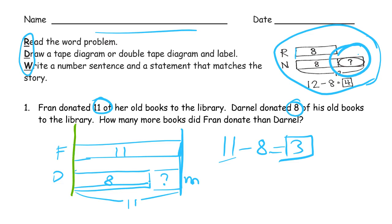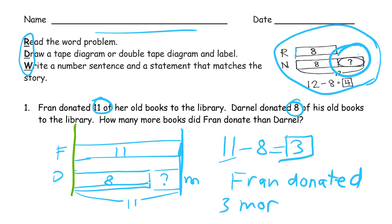Now our answer statement: 'How many more books did Fran donate?' Fran donated three more books. You have to have the tape diagram, you have to have the number sentence, and you have to have the answer statement — that's everything you need.